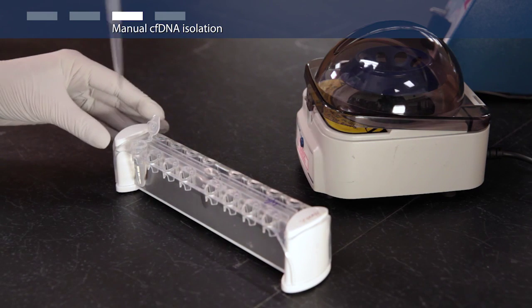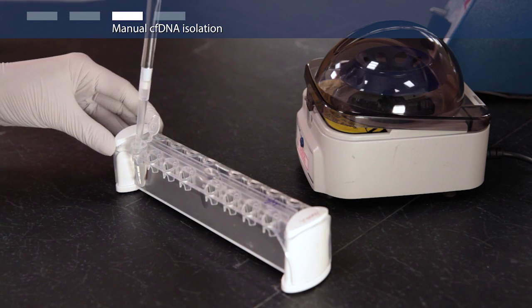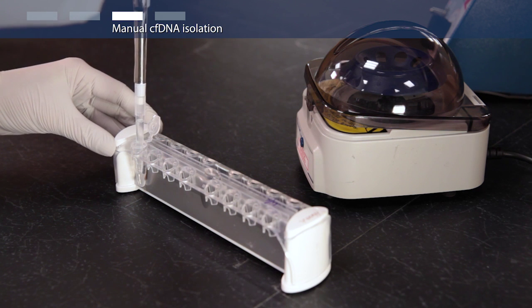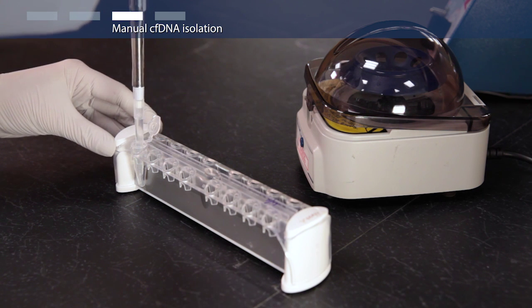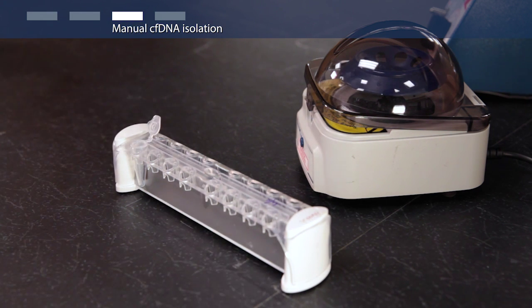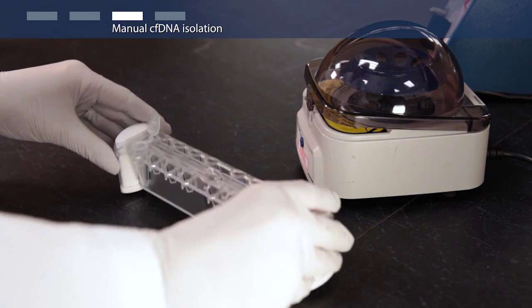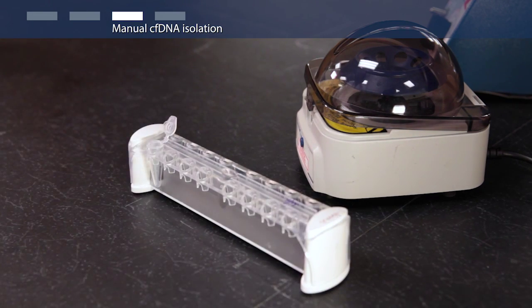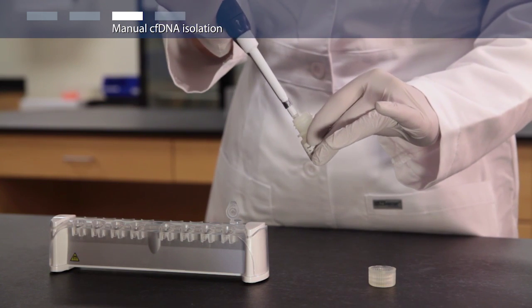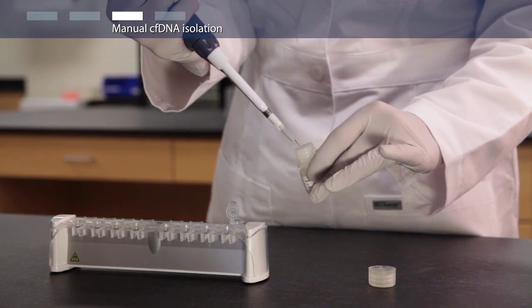Place the tube on the DynaMag 2 magnet for 1-2 minutes, leaving the tube on the magnet. Remove the supernatant, tap the magnet stand down 5 times and remove any residual liquid. Let air dry for 3-5 minutes. Now add 50 microliters of DNA elution solution.